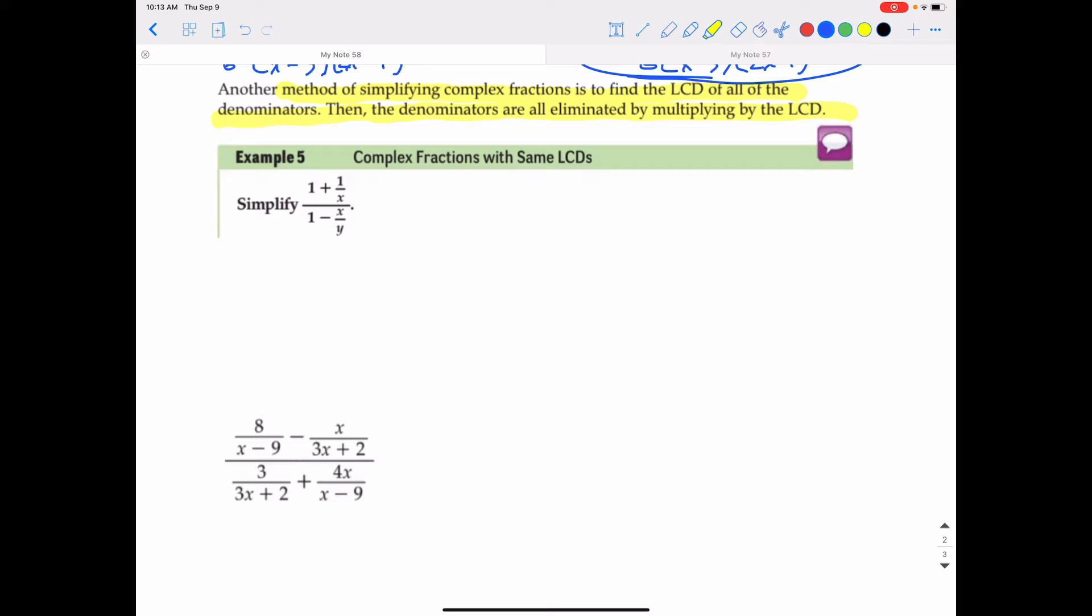So, we're going to look at the denominators of the smaller fractions. I'm talking about the physically smaller fractions. That would be the fractions within the fractions like 1 over x and x over y. So, the common denominator of just those two fractions would be x, y.